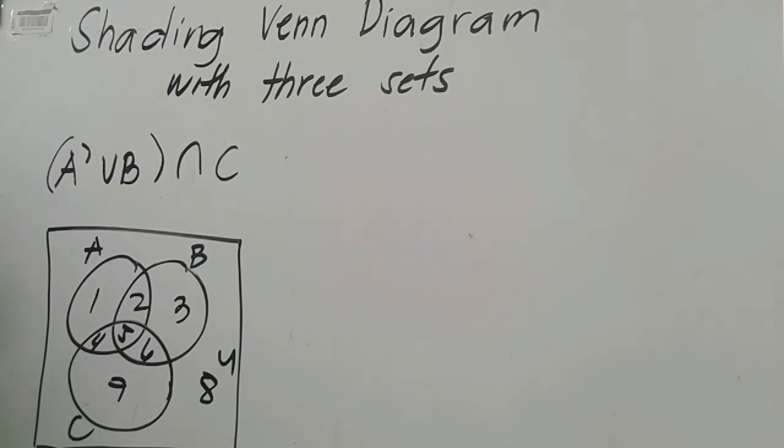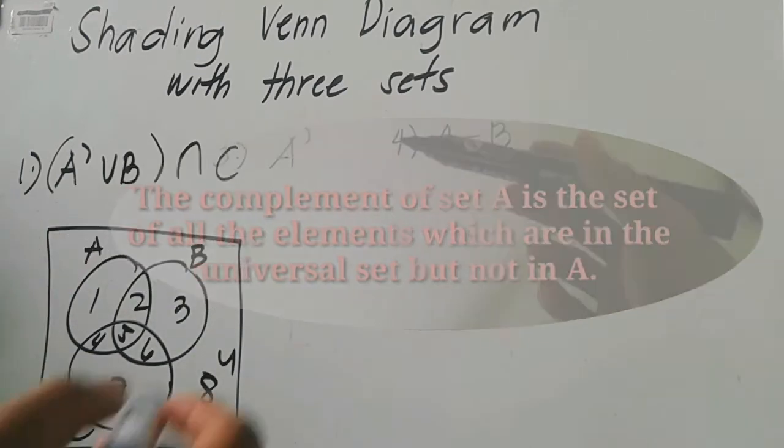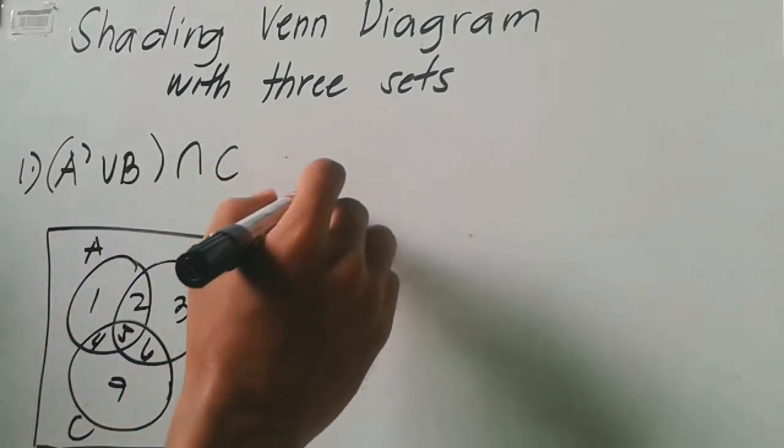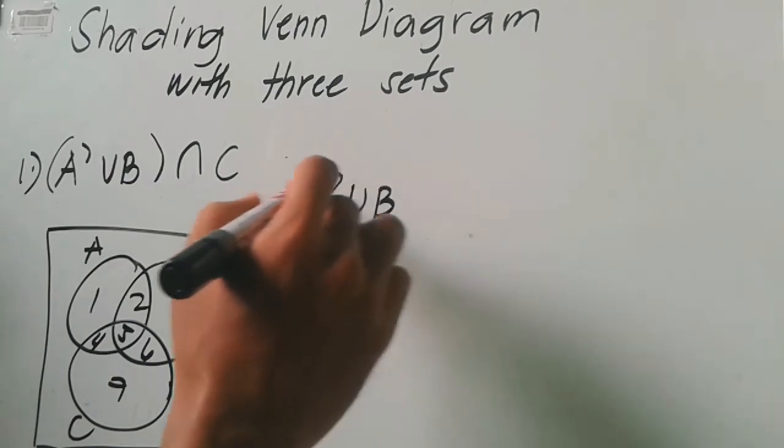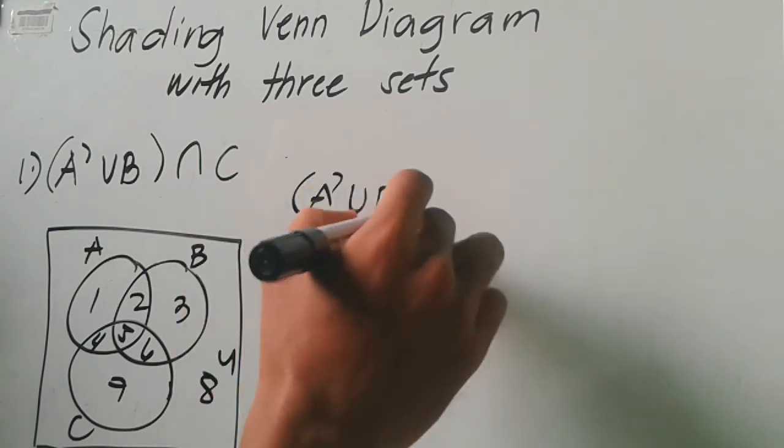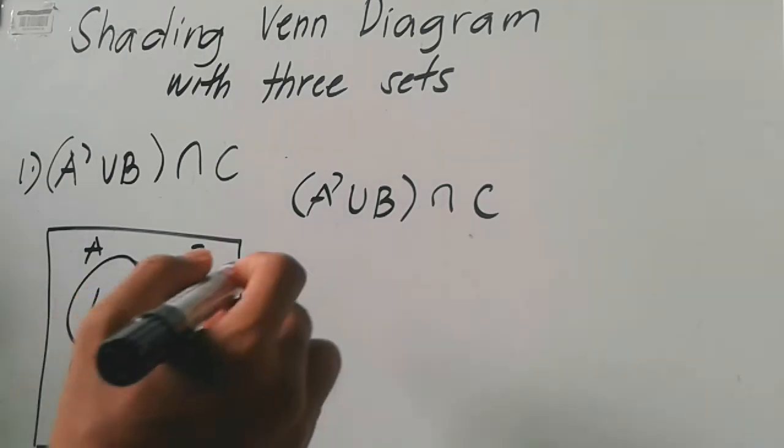So using the set operation, so alam natin itong A complement. Again, it complements the set of all the elements which are in the universal set but not in A, yung wala sa A. Sagutin natin ngayon yung complement union B intersection C.